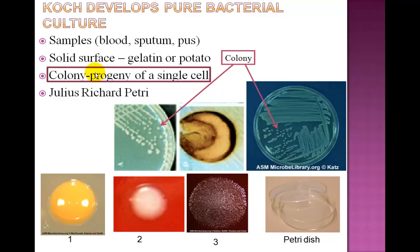The anthrax bacillus is relatively large and easily identified with the microscope. Therefore, it was easy for Koch to identify the bacterium. However, because most bacteria are small and hard to differentiate between one another, Robert Koch had a hard time studying other diseases.